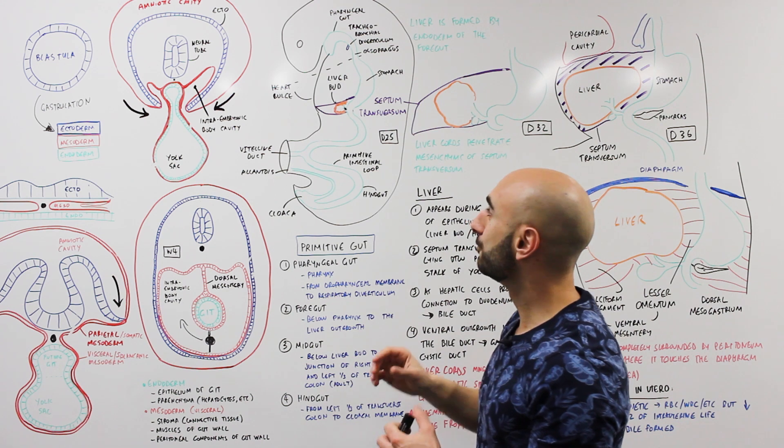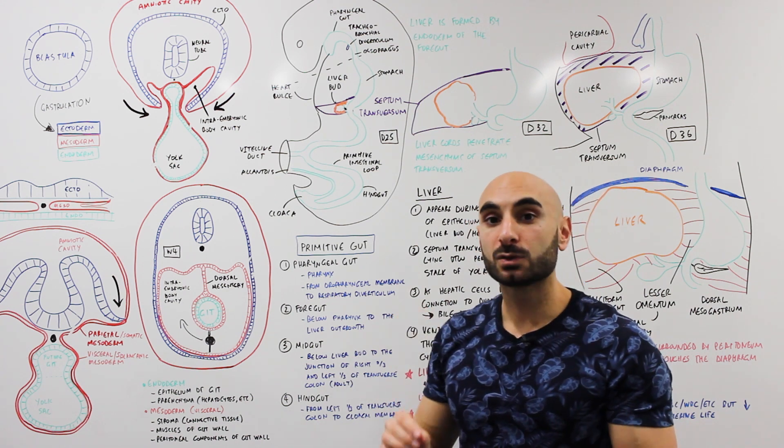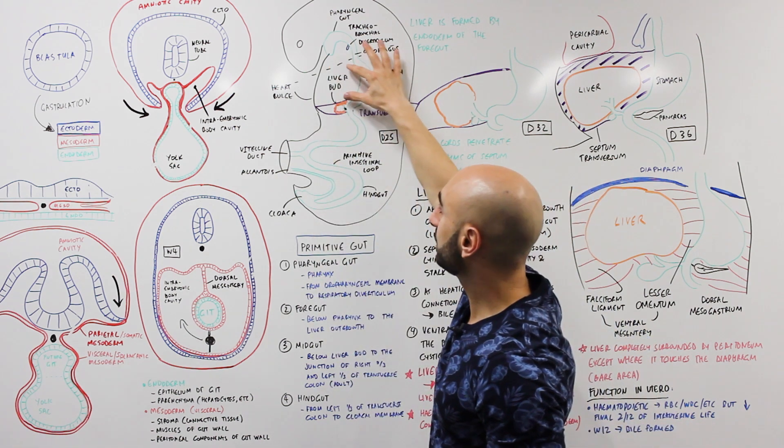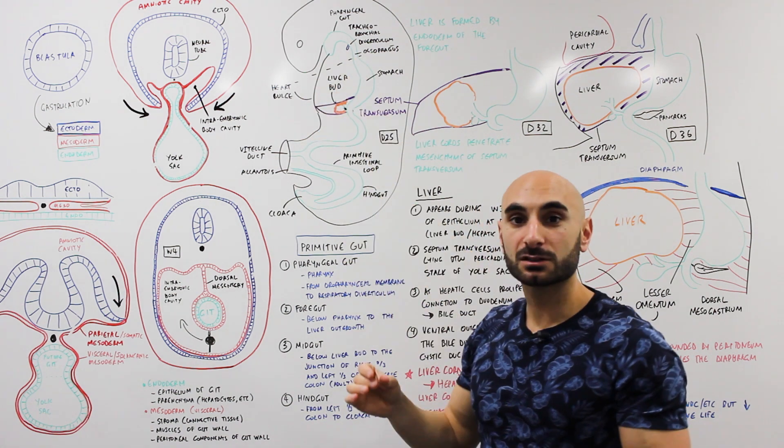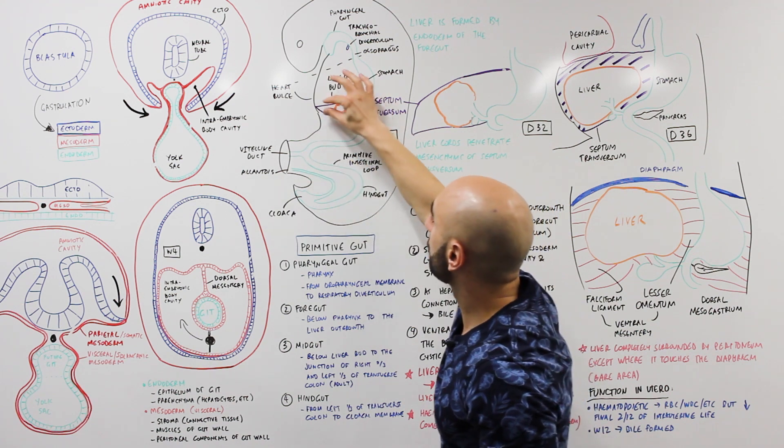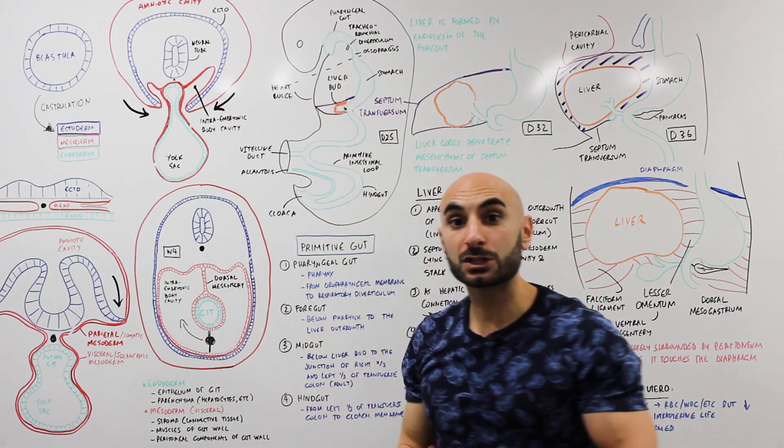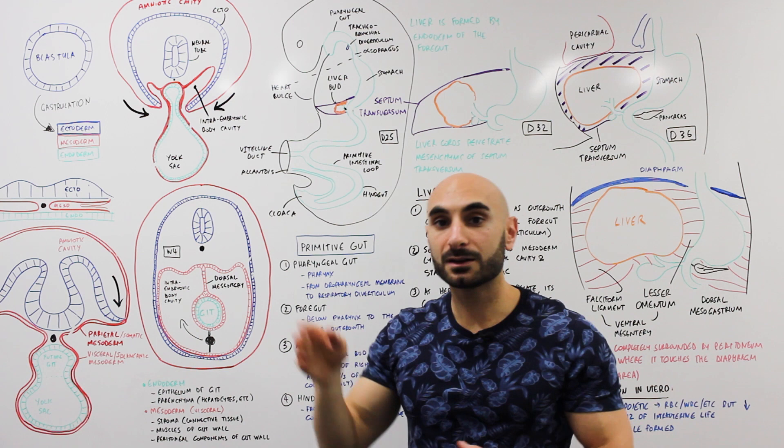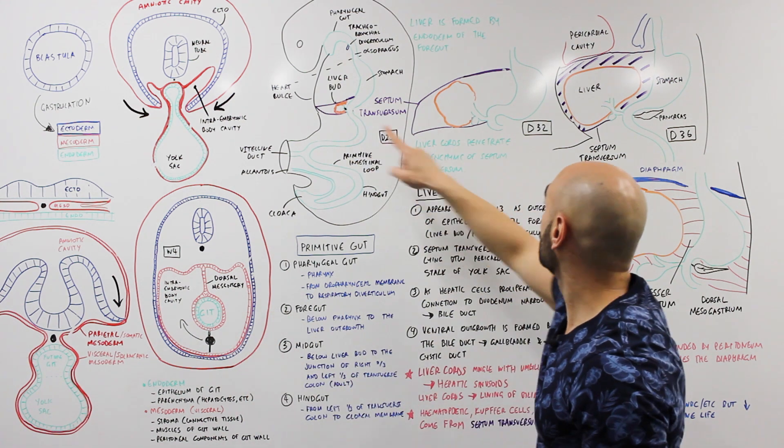Think about it as simply mesoderm, and it lies between the pericardial cavity above it and the connection of the yolk sac below it. So this purple bit is pretty much just tissue that the liver bud grows into.